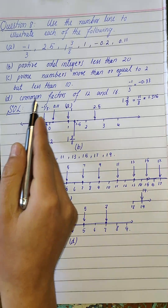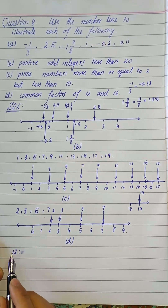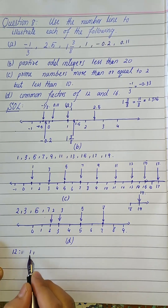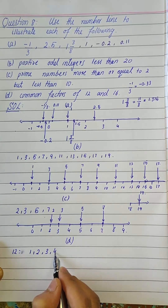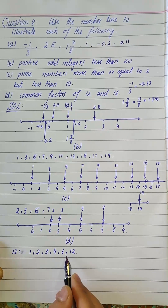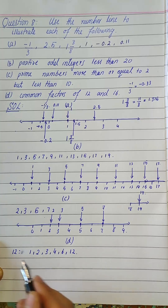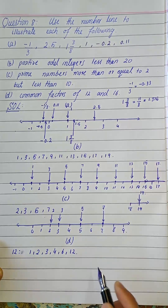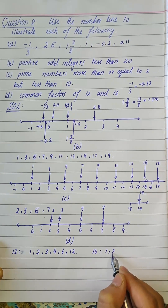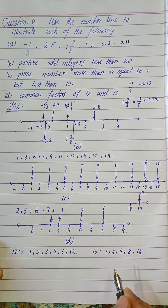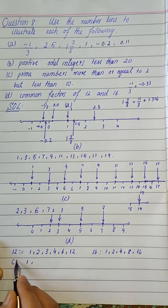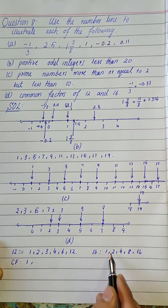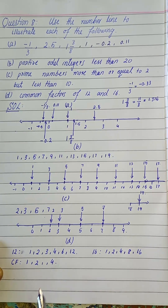In part (d) we have to list the common factors of 12 and 16. The factors of 12 are 1, 2, 3, 4, 6, and 12 itself — these all divide 12 completely. The factors of 16 are 1, 2, 4, 8, and 16 itself. Now we find the common factors: 1, 2, and 4. These three are the common factors of 12 and 16, and we need to illustrate these three values on the number line.